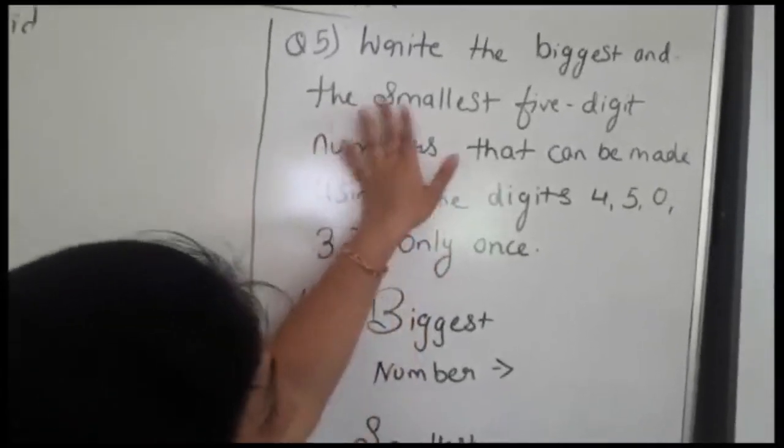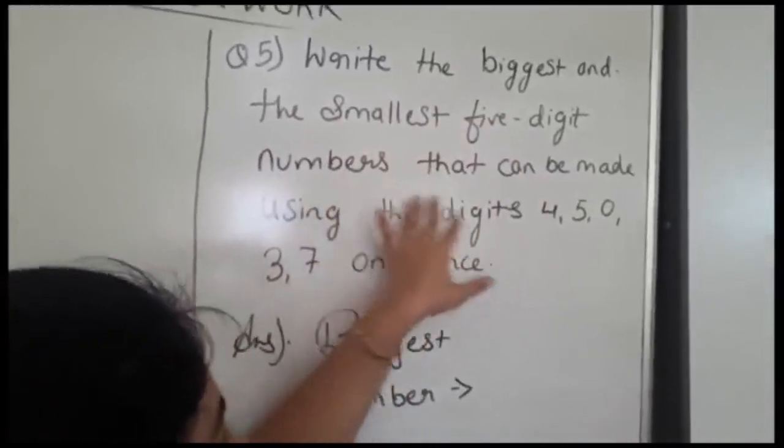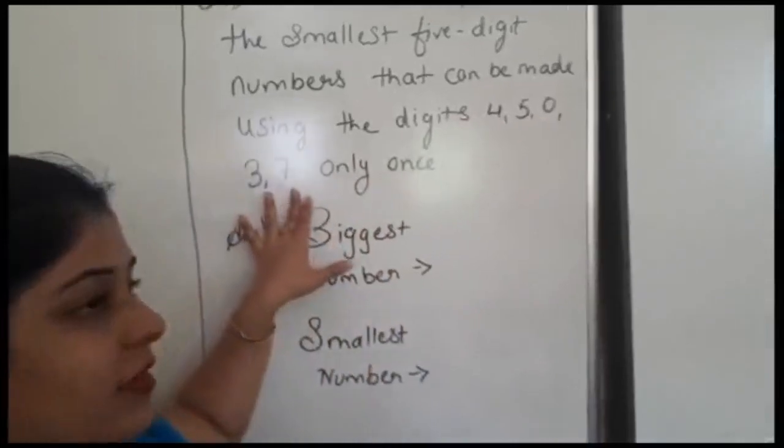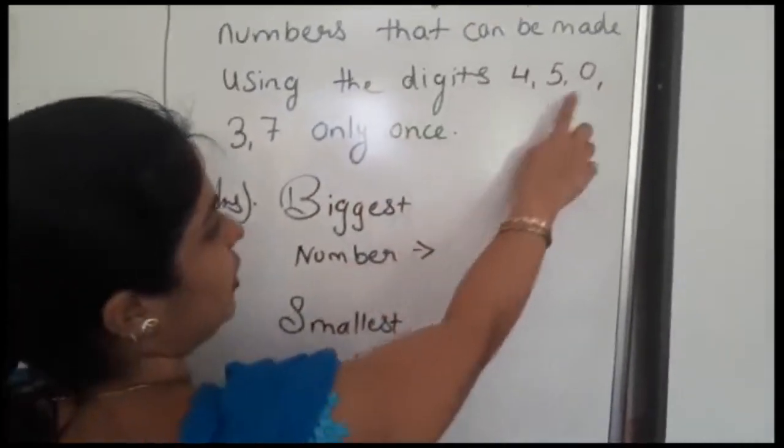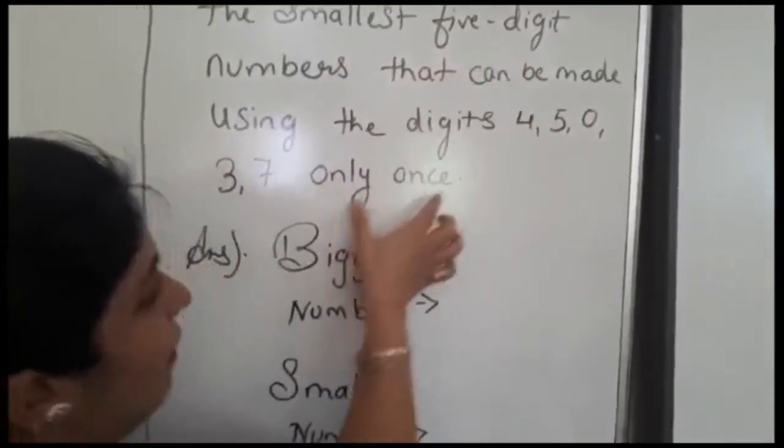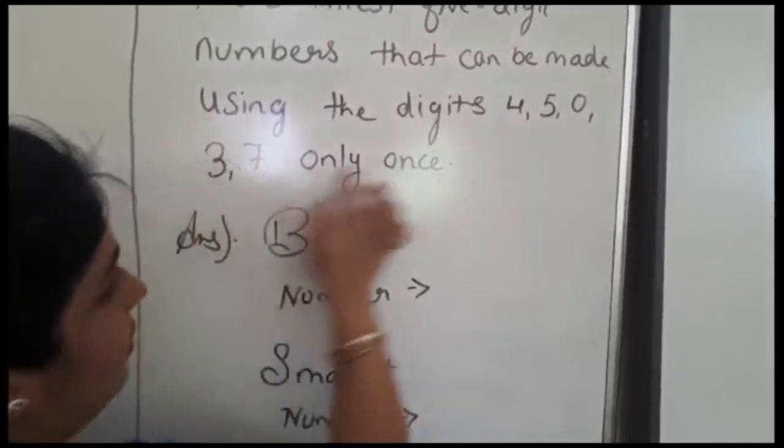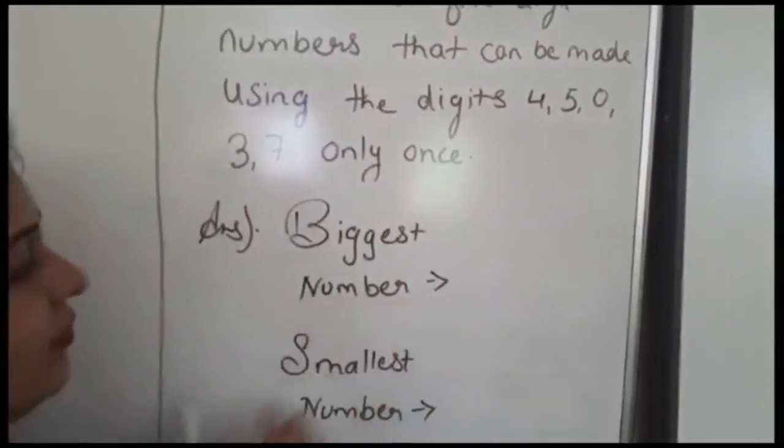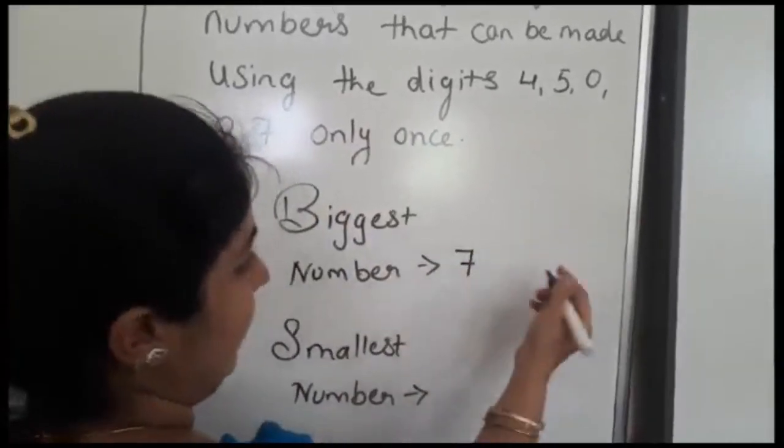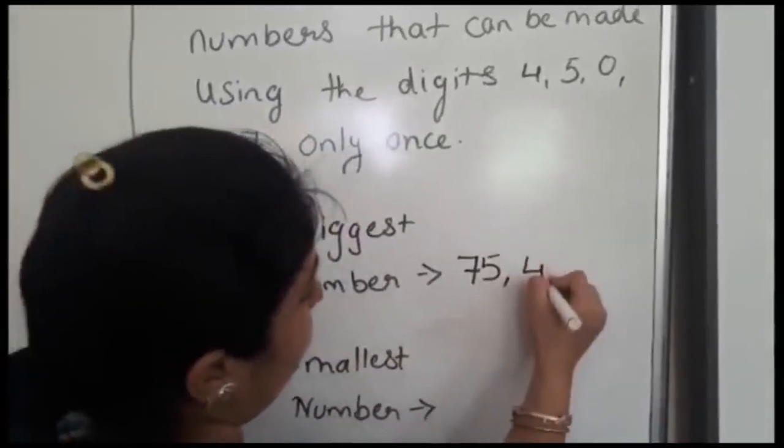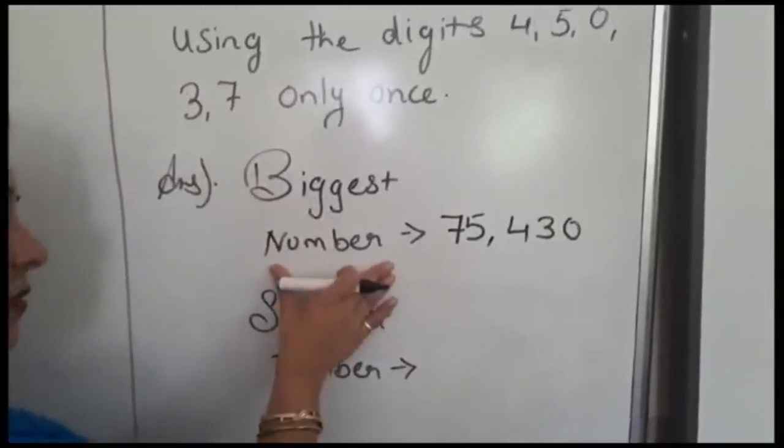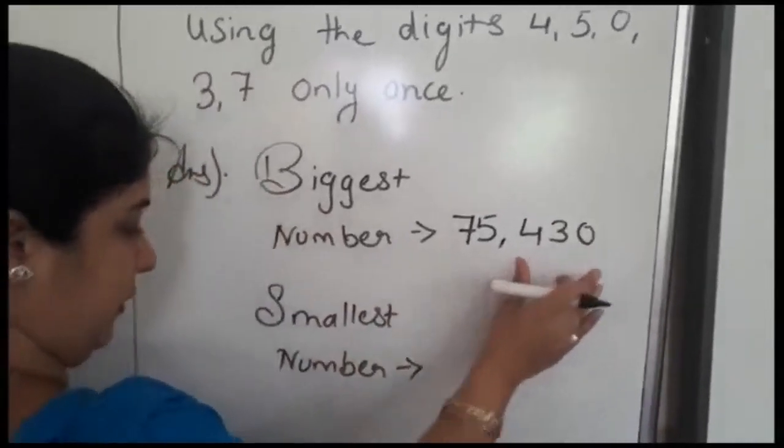Question number 5: Write the biggest and the smallest 5 digit numbers that can be made using the digits 4, 5, 0, 3, and 7 only once. We have to use only these 5 digits to make the biggest and smallest 5 digit numbers, using these digits only once. Let's see first biggest 5 digit number. Out of these 5 digits, which is the biggest number: 7. Then second biggest: 5, then 4, then 3, last is 0. Biggest number we got: 75,430.